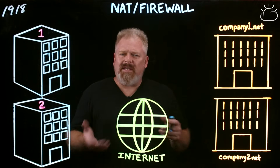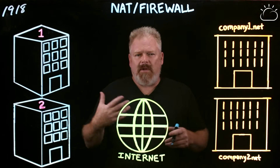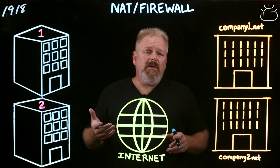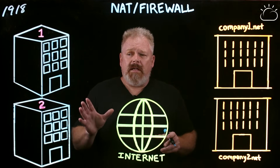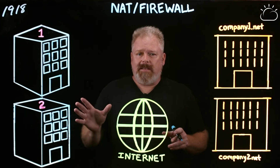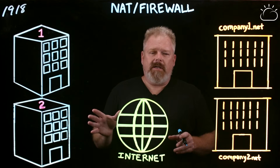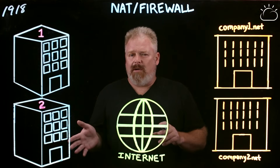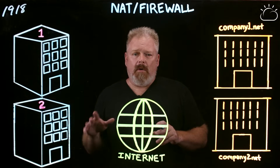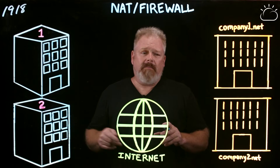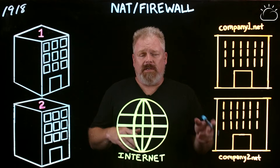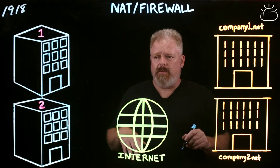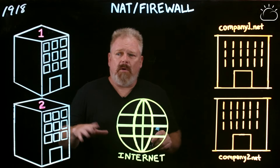To cover this topic, I always find it's better to use analogies, and we're going to use the apartment analogy to describe what an internal network or TCP/IP range is versus an external TCP/IP range.